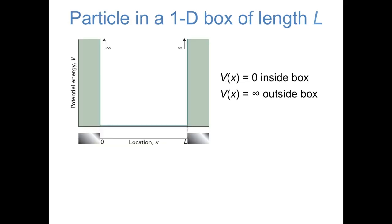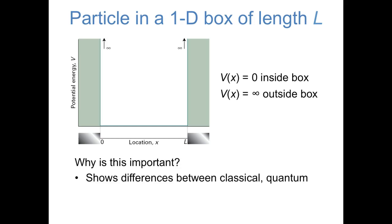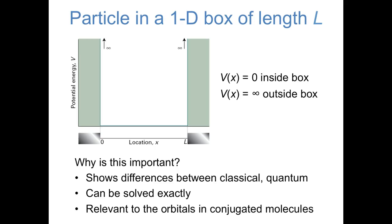That brings us back to our first important model system: the particle in a one-dimensional box of length L. The potential energy operator is zero inside the box, just like free space, and infinity outside the box. This system is important because it's our first opportunity to see major differences between classical and quantum mechanics, the particle in a box can be solved exactly, and it is physically relevant — specifically, it allows us to predict the pi orbitals of conjugated molecules and their energies.